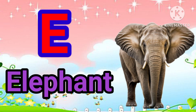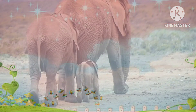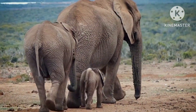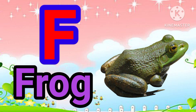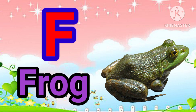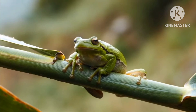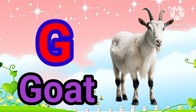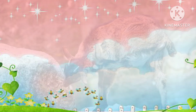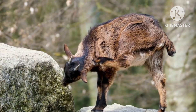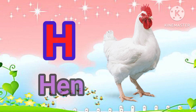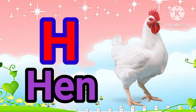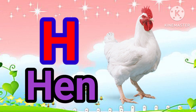E is for Elephant. E, E. Elephant. F is for Frog. F, F. Frog. G is for Goat. G, G. Goat. H is for Hand. H, H. Hand.